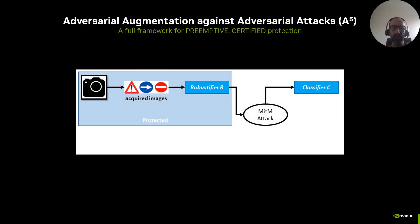We introduce adversarial augmentation against adversarial attacks, or A5. One aim of our work is to equip an acquisition device with a robustifier network that makes any acquired image certifiably robust against adversarial attacks. Differently from other defenses, ours is put in place before the attack is crafted. We also use bound propagation to certify the robustness of the image. In the configuration shown here, A5 is used to protect against man-in-the-middle attacks.